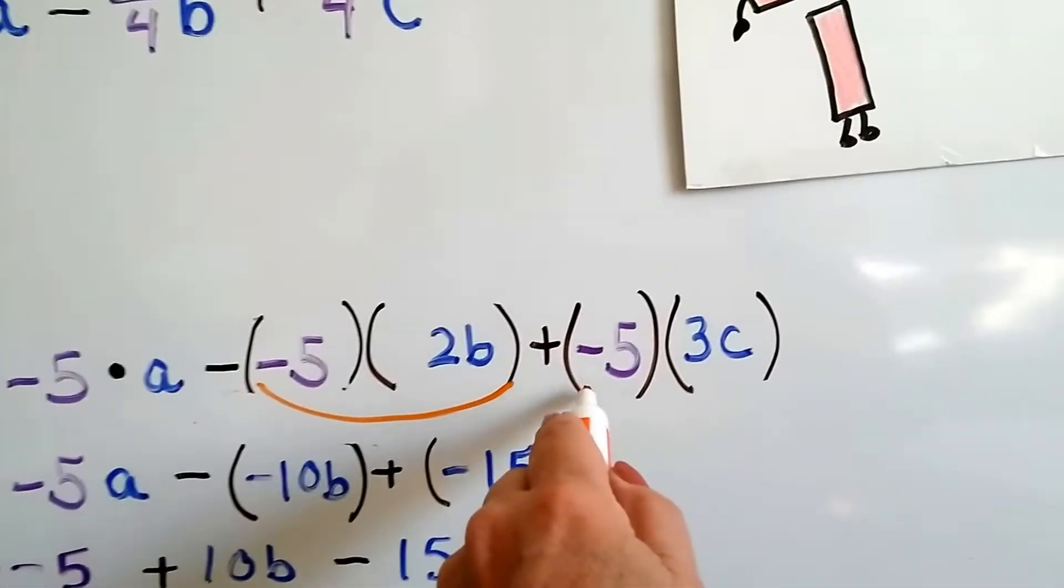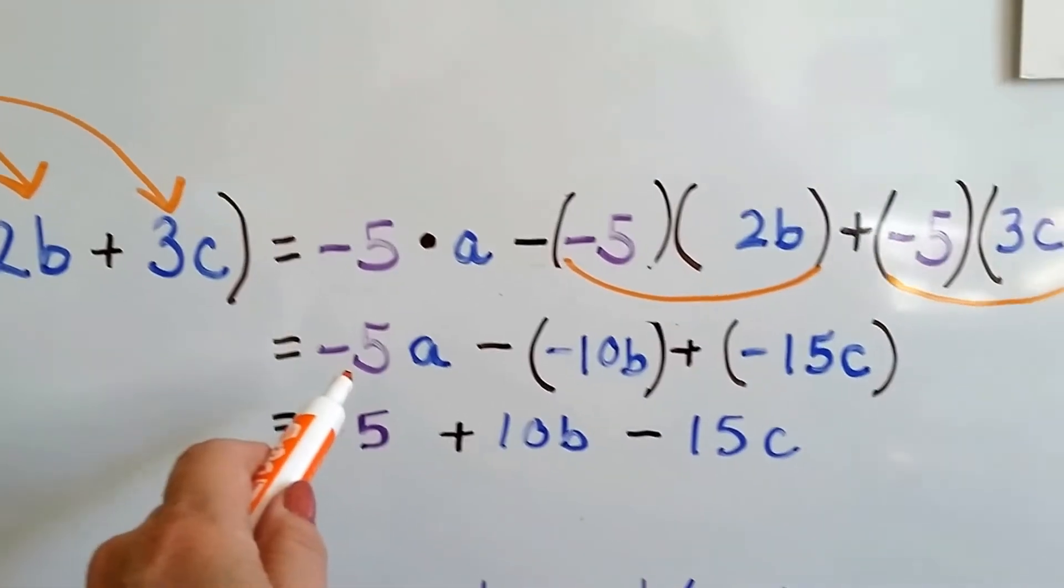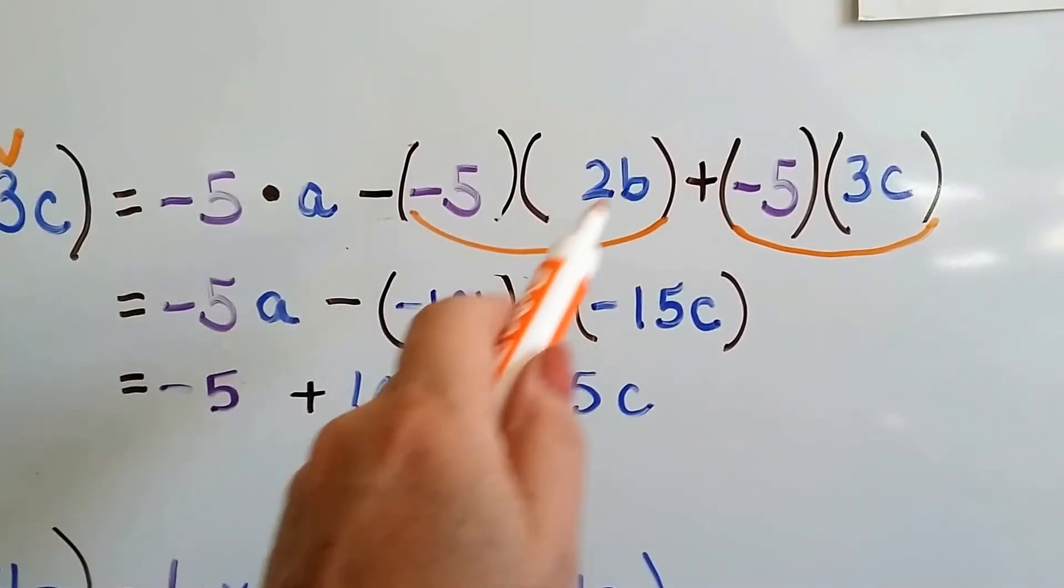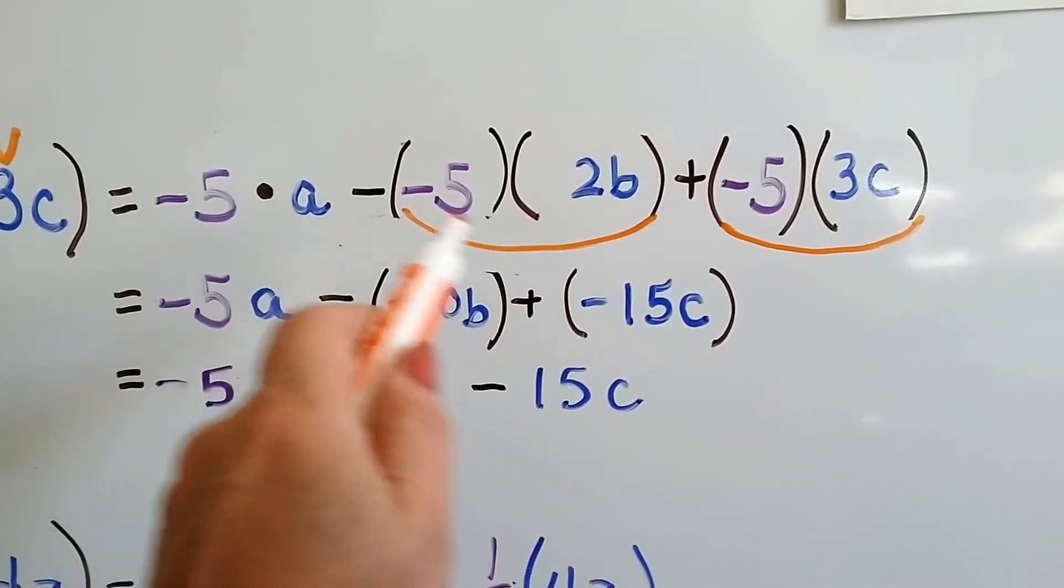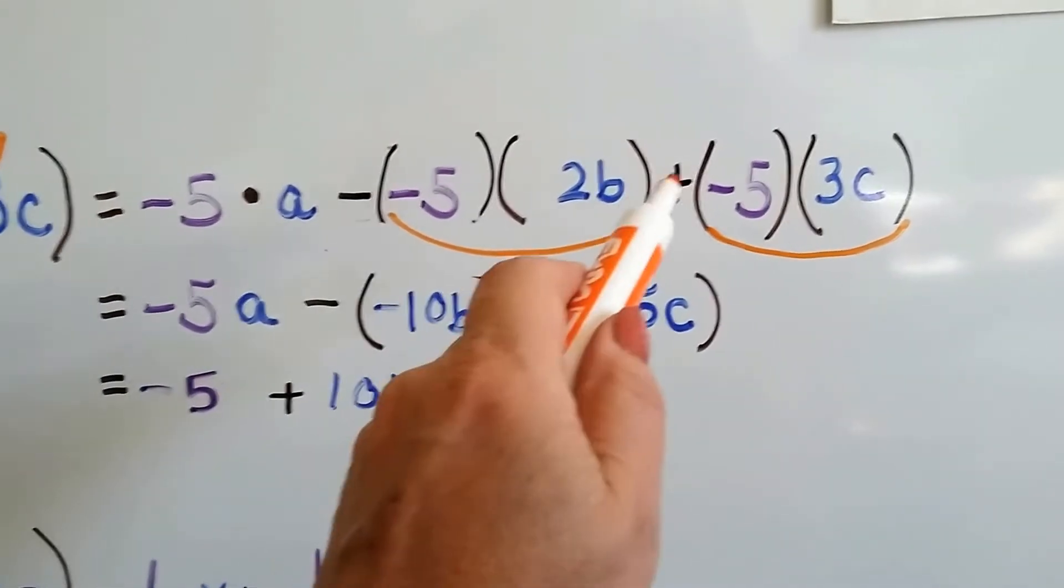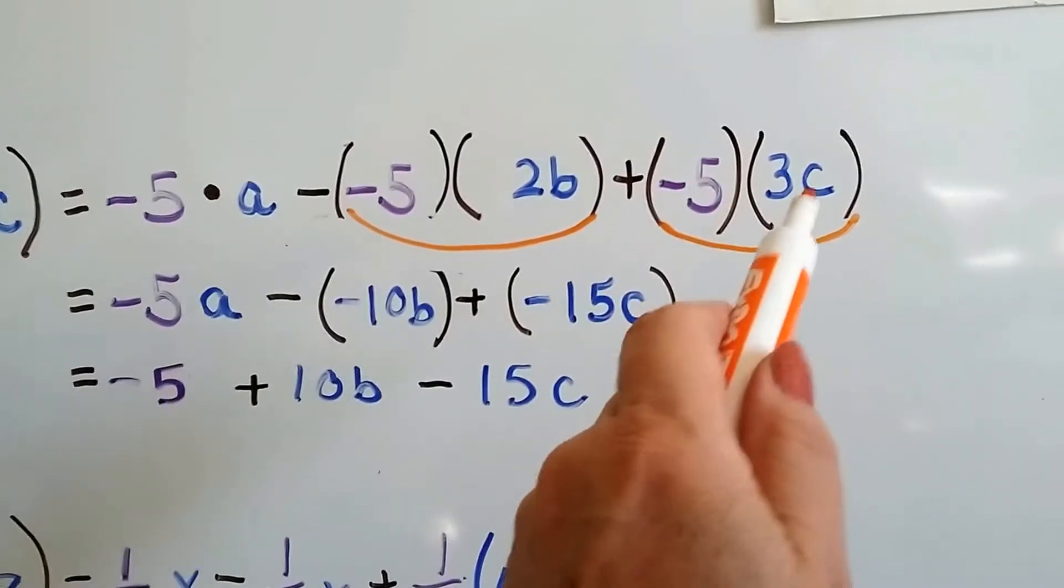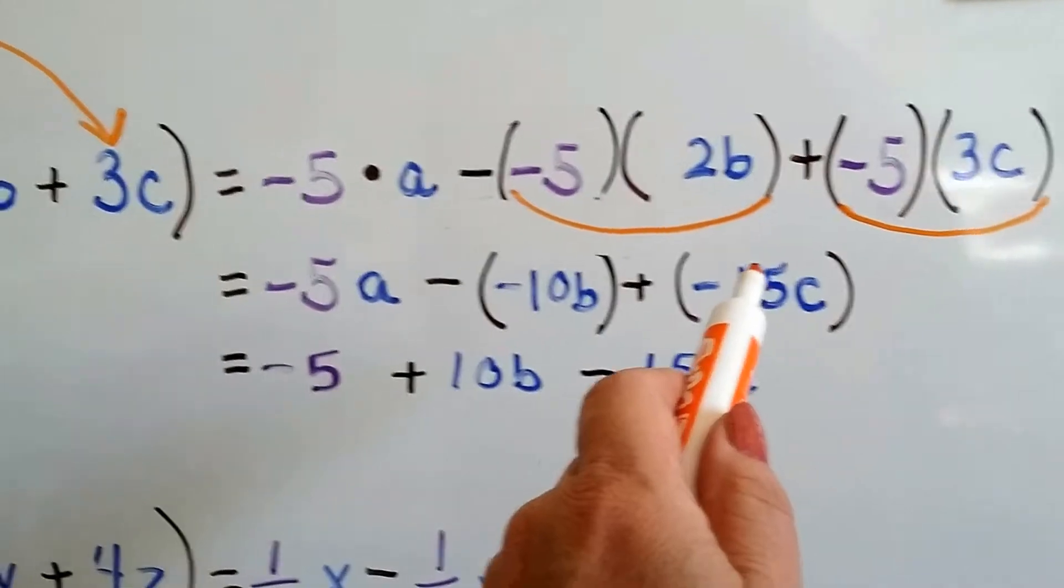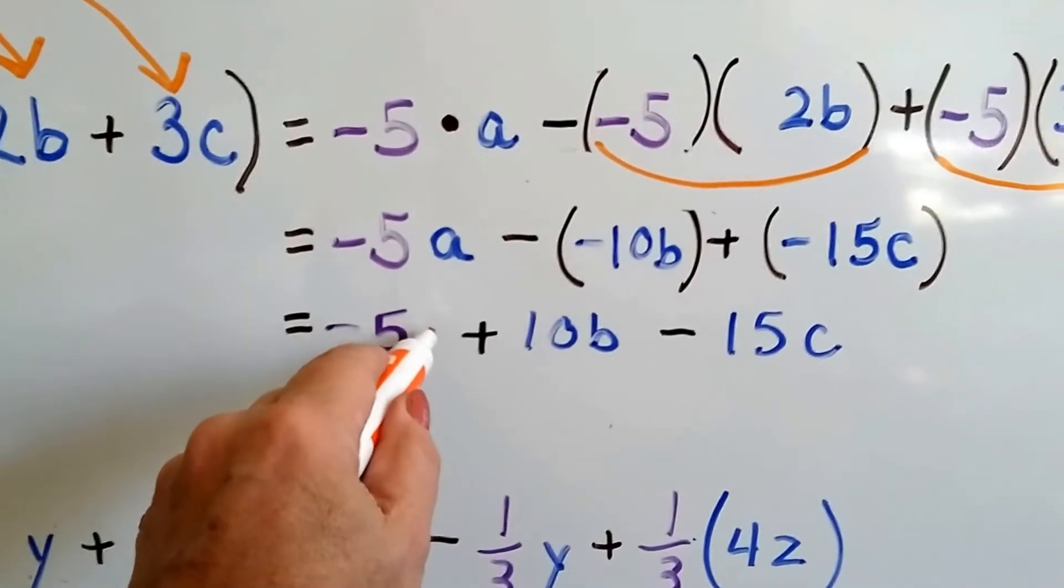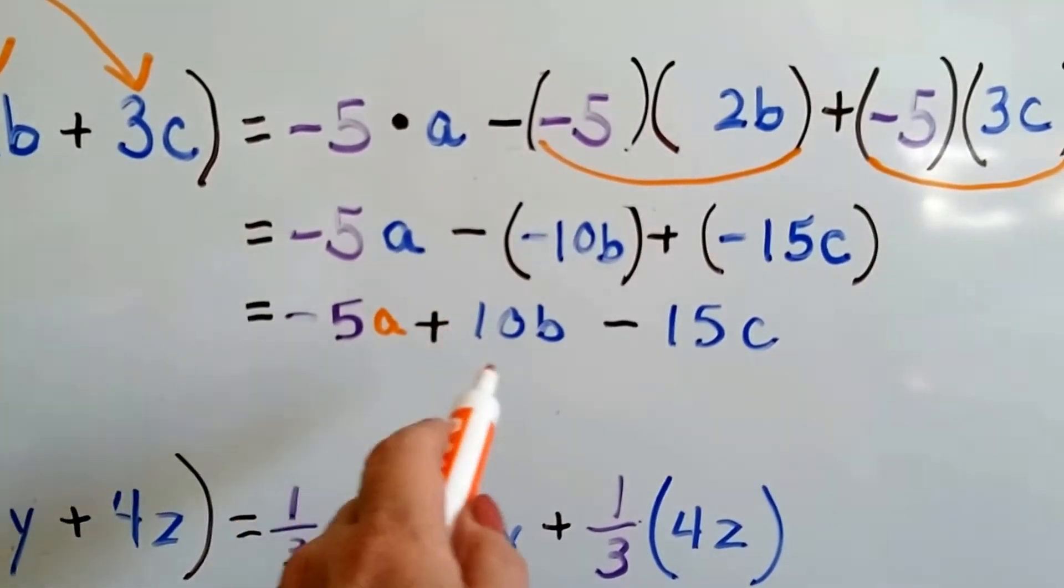So now we've got to do these separately. So we've got negative 5 times a is going to give us a negative 5a. Here's our minus sign. Now we have to do negative 5 times 2b because that's a negative and that's a positive. It's going to give us a negative 10b. Here's our plus sign and then we're going to do negative 5 times 3c. Negative and positive makes a negative. We've got negative 15c. Now, this ends up becoming negative 5a plus 10b.